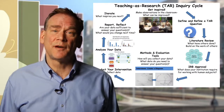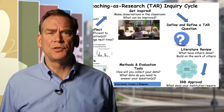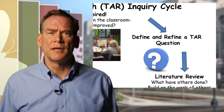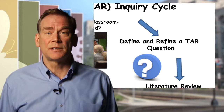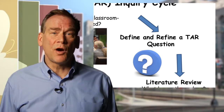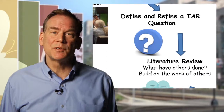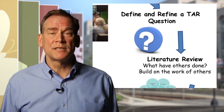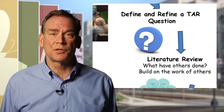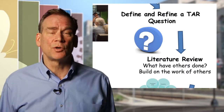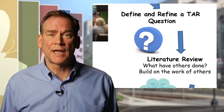Step two is to try to define a research question. What hypothesis could you apply to that kind of environment that you might like to learn about? Following a definition of a research question, it's time to explore the literature and see what it says about your particular research question or the classroom or learning community environment that you've started to look at.